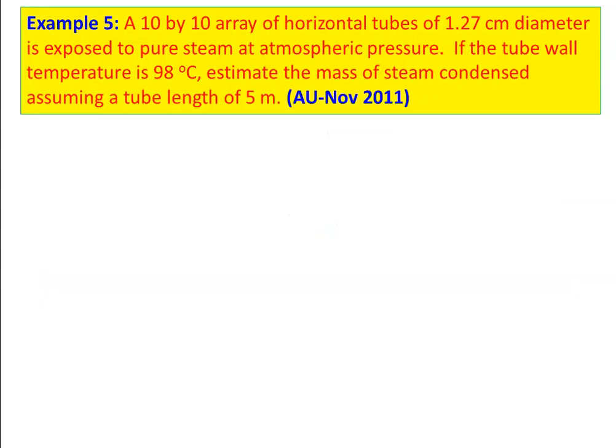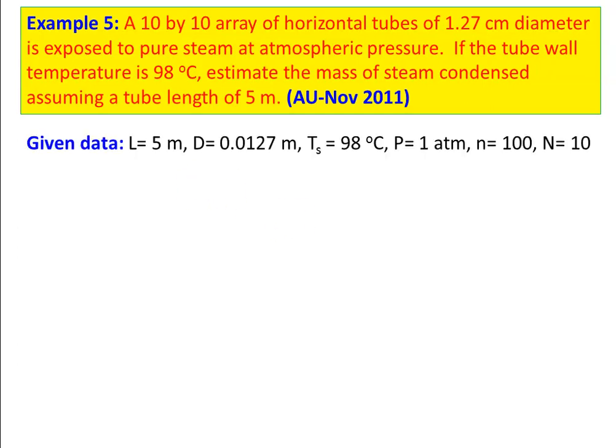Example number 5, from question paper November 2011: A 10 × 10 array of horizontal tubes of 1.27 cm diameter is exposed to pure steam at atmospheric pressure. If the tube wall temperature is 98°C, estimate the mass of steam condensed, assuming length of tube = 5 m. Given data: L = 5 m, outer diameter D = 0.0127 m, surface temperature Ts = 98°C, atmospheric pressure so vapor temperature Tv = 100°C. Total number of tubes n = 100, number of horizontal rows (arrays) capital N = 10.